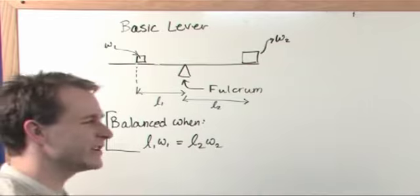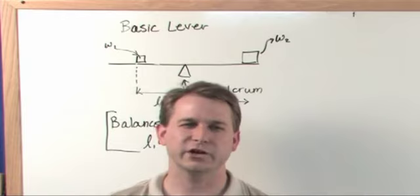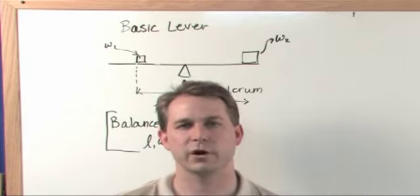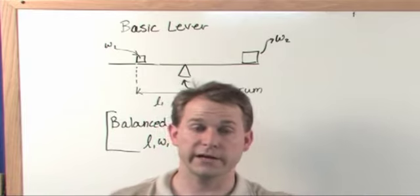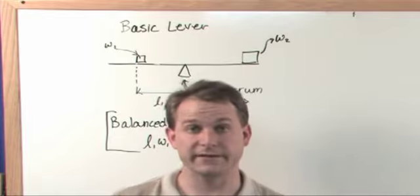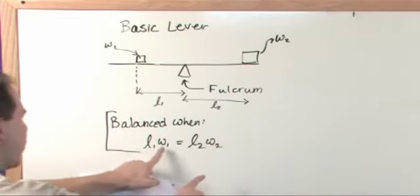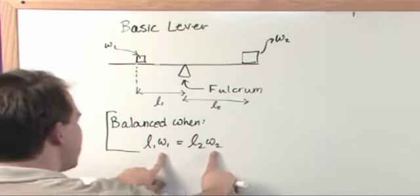Now, you can kind of get a sense of that because what I was telling you before is that when you go to the park, if you have a toddler on one end and an adult on the other, we obviously have different weights, right? The weight of the toddler is going to be totally different.